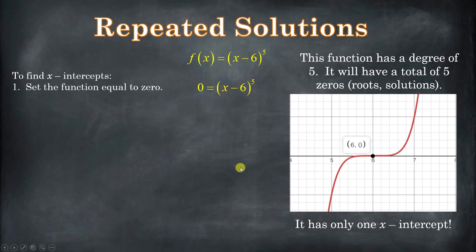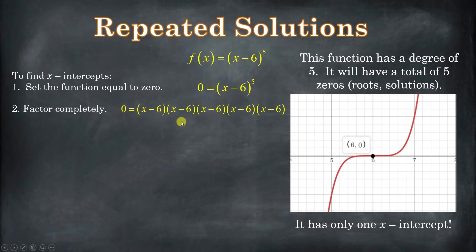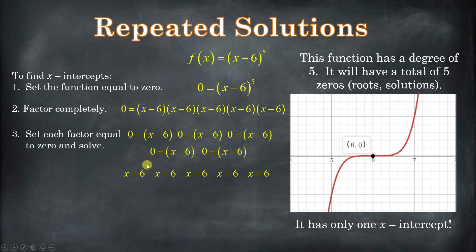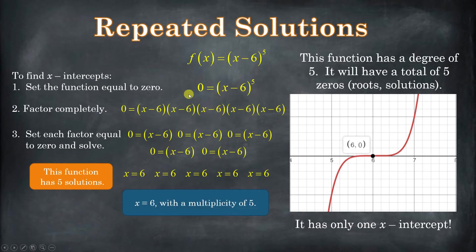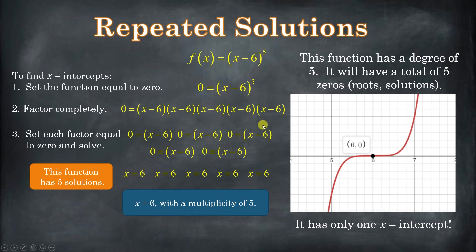We set it equal to 0 and factor it completely. x to the fifth means the base times itself 5 times. We take each of those factors, set them equal to 0, and solve. As you can see, we have five solutions of x equals 6. The x-intercept is 6, but the solutions have a multiplicity of 5 — we have 5 of x equals 6. Multiplicity of 5 means that answer is repeated 5 times. When dealing with polynomial functions, if the degree is 5, you're going to have five solutions; they might not be unique, and that's where we talk about multiplicity.